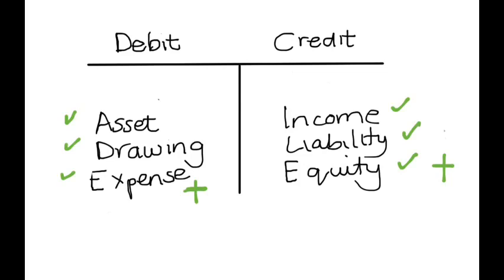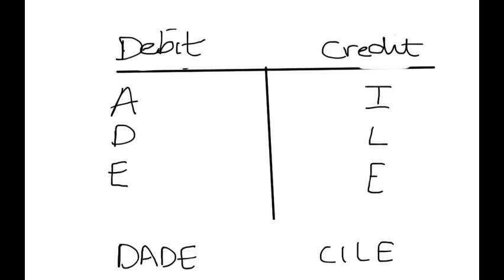If they behave in the opposite order — your assets, your drawings, and your expenses — if they become less, we will do the opposite and take them to the credit side. And your income, liability, and equity — if they do the opposite — we will take them to the debit side. For now, let's memorize this formula. You can write it as 'Daddy Kyle': Debit — Asset, Drawings, Expense; Credit — Income, Liability, Equity.